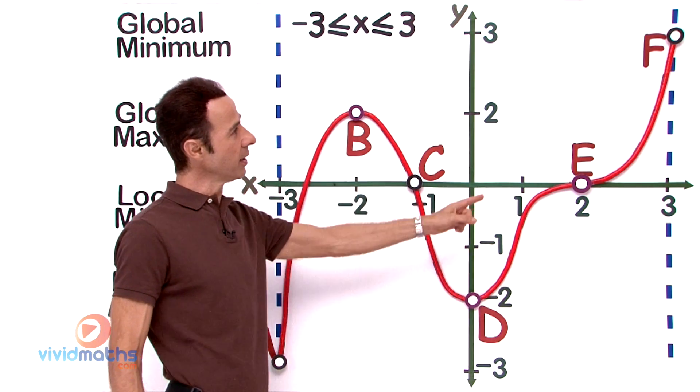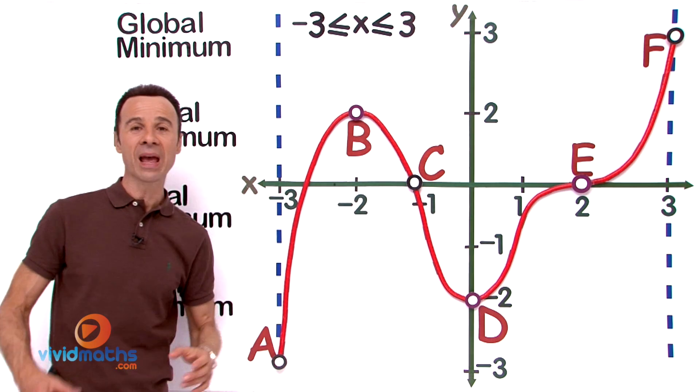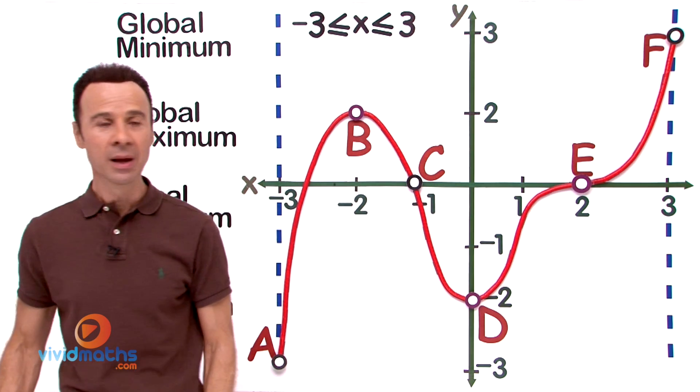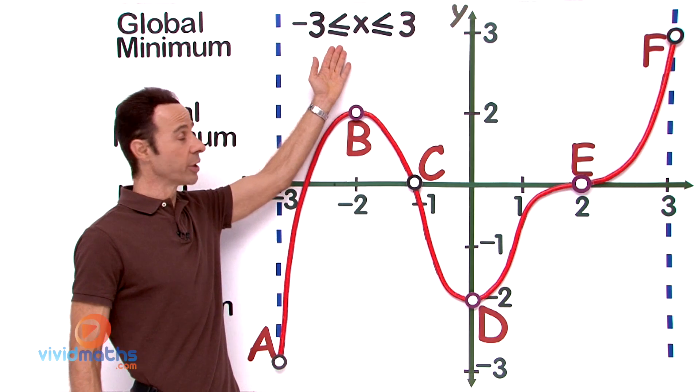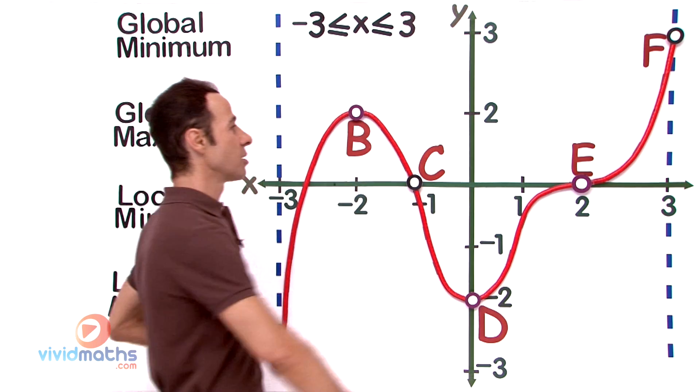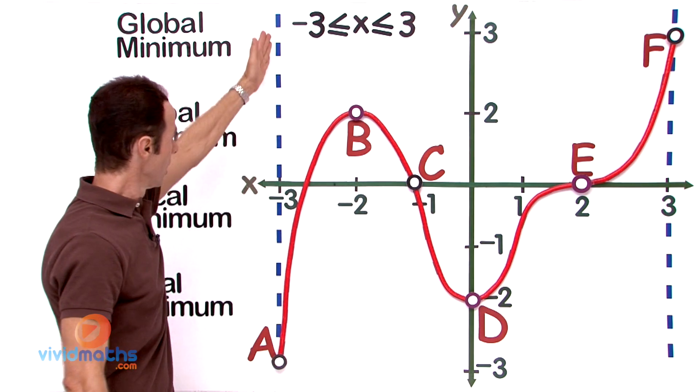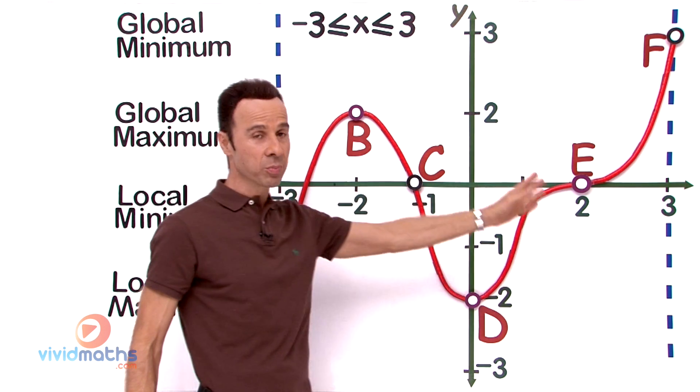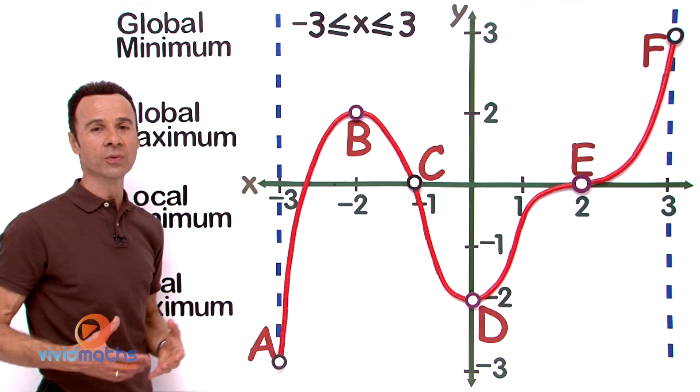B, C, D, E, all the way to F. Now we have a domain—it is a restricted domain from -3 ≤ x ≤ 3. Within that domain you can see the two endpoints in dotted blue on each side. So what we are after is to find these critical points.